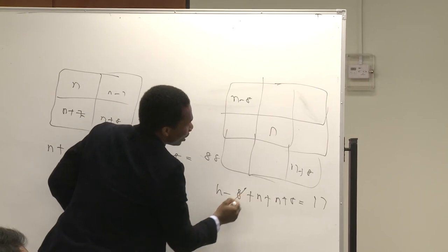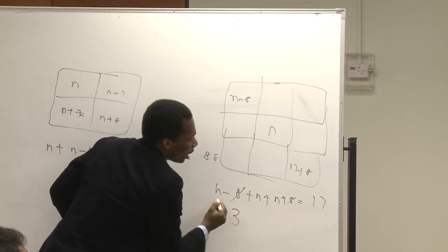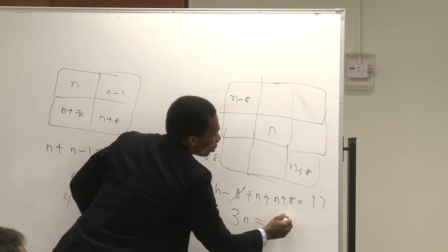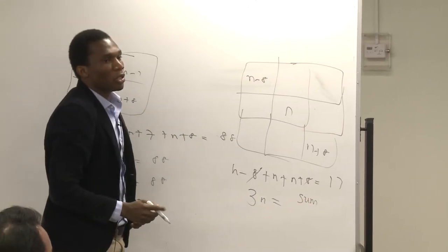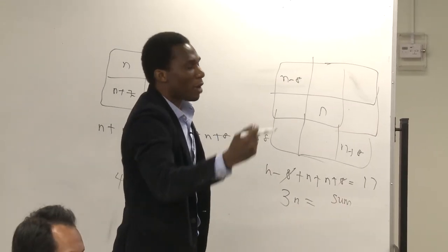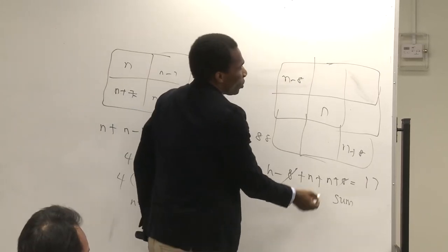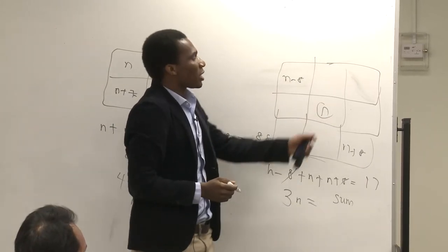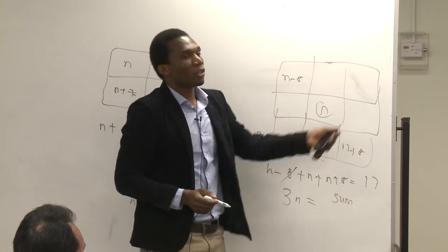Then here, this 8 will cancel that 8. So immediately you have 3n, which equals the sum that you have given me. So all I needed to do was to divide the sum that you gave me by 3. And once I divide it by 3, I can get what is n. Once I have what is n, I can fill in the remaining gaps.